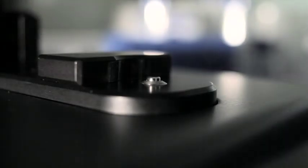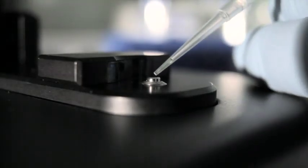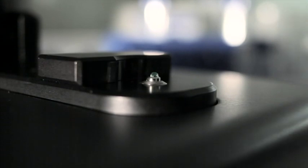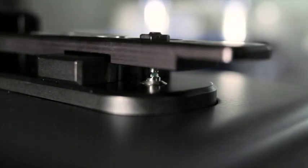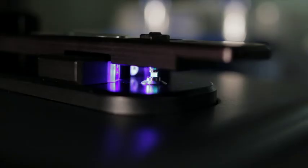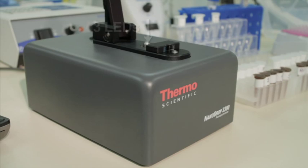The NanoDrop 3300 fluorospectrometer employs the same patented microvolume sample retention system as the NanoDrop 2000C spectrophotometer, with fluorescence measurements being performed with as little as 1 microliter of sample. The user chooses one of three LEDs as the excitation source, which fires at the sample horizontally. The subsequent sample fluorescence is then collected at a 90-degree angle vertically into an internal spectrometer.